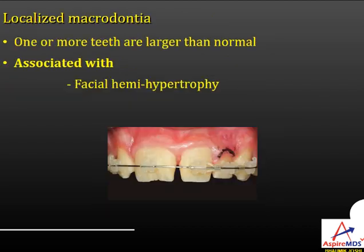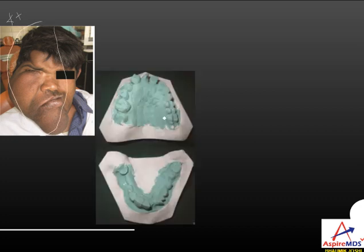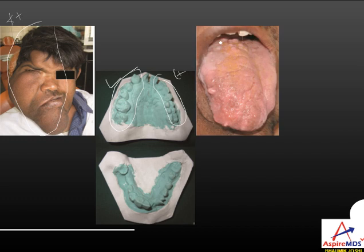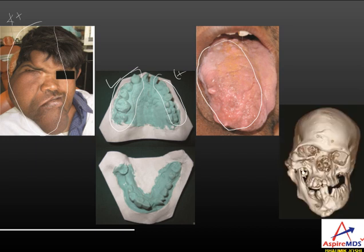Relative generalized macrodontia results from a relatively small jaw compared to larger tooth size, also causing crowding. It is a hereditary condition. Localized macrodontia involves one or more teeth larger than normal and is seen in facial hemihypertrophy, where the right side of the face shows hypertrophy. On the dental cast, the tooth size on the affected side is larger than on the other side. This condition also involves an enlarged tongue and mandible or maxilla on one side.